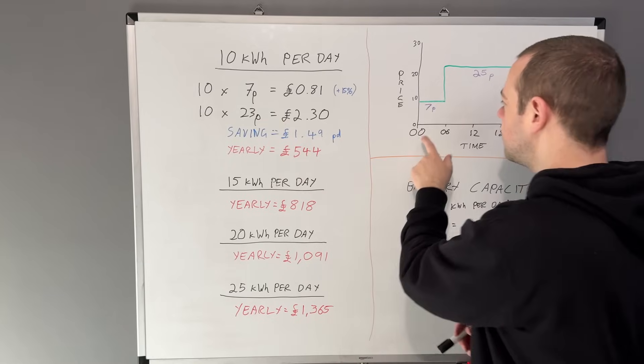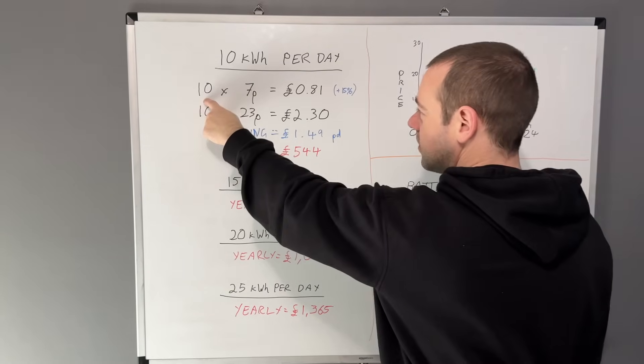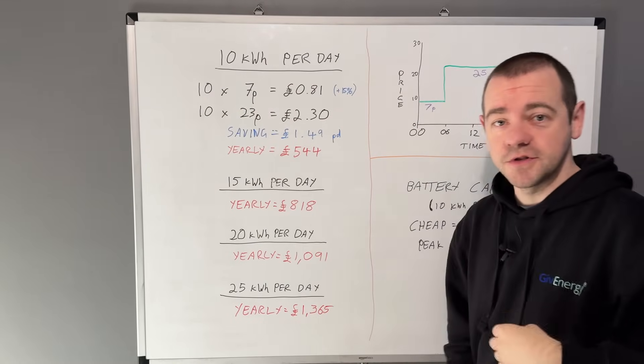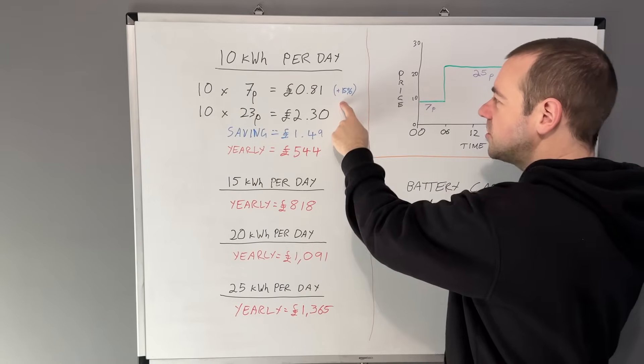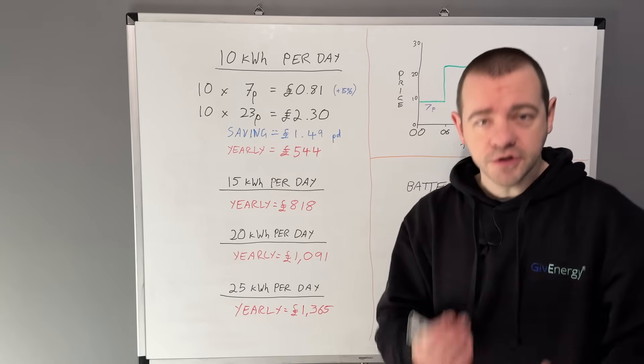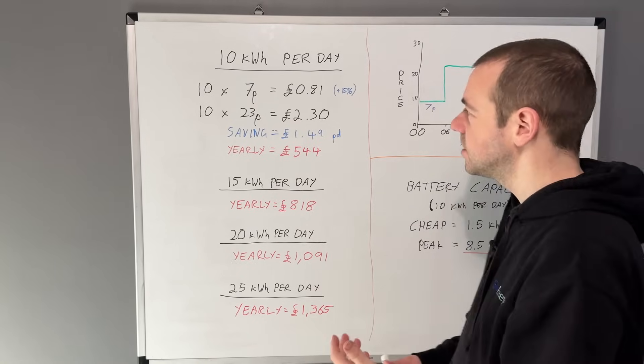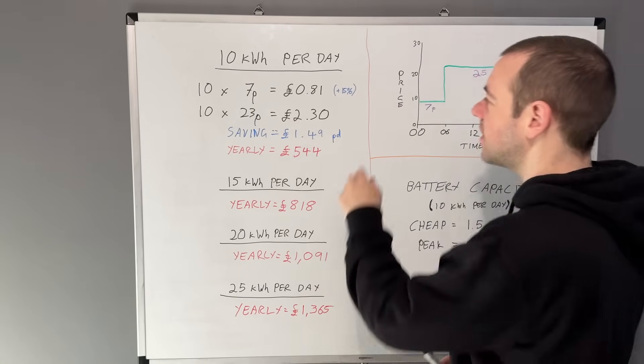So in terms of the cheap nighttime rate, that's 7 pence. Simply put, that would be 10 kilowatt hours times 7p, which gives us 70 pence. But I've added 15% on top of that to allow for inverter losses and a tiny bit of peak rate usage, which you will always have with any battery system.